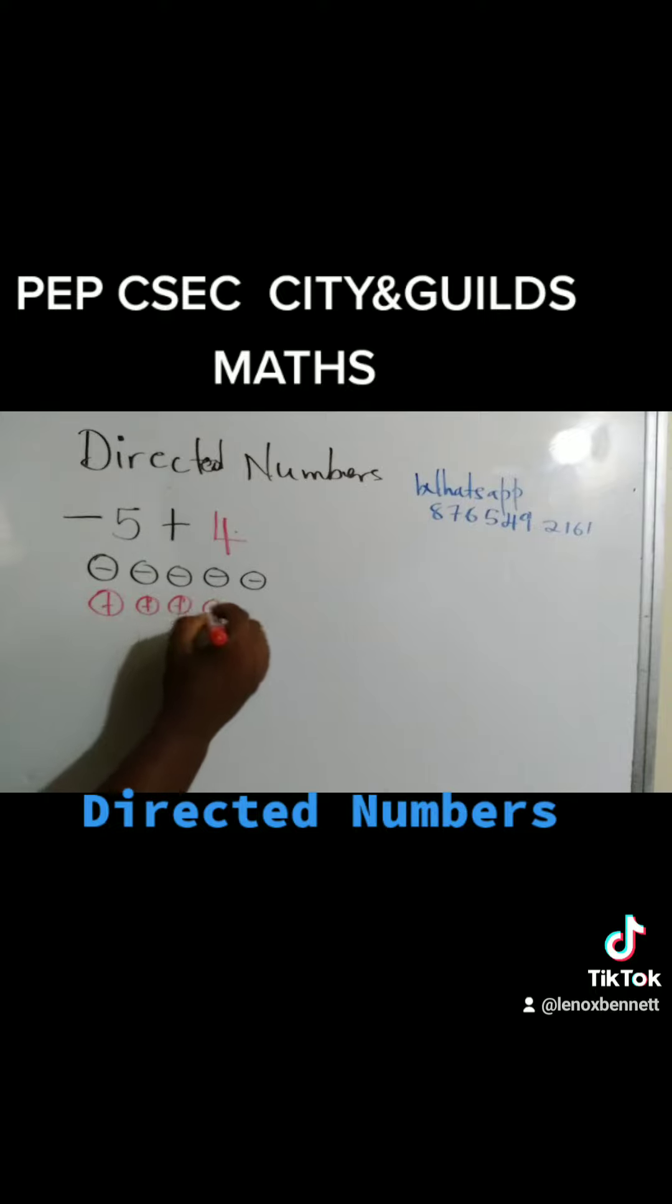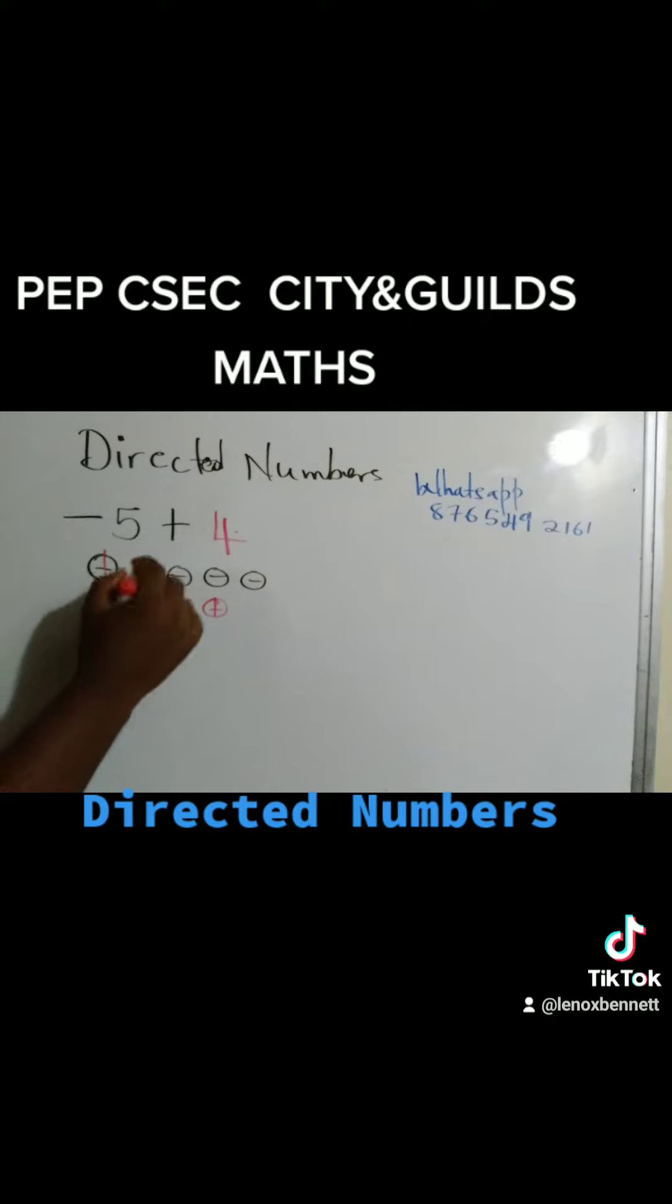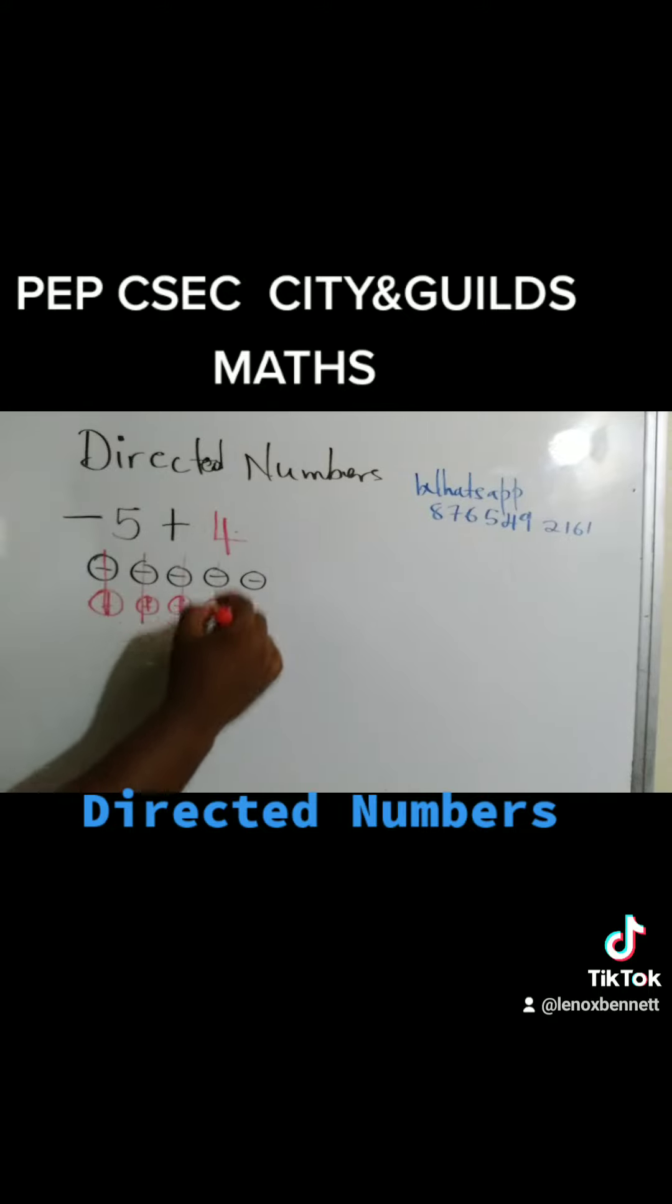Now each positive cancels a negative. So we call it a zero pair. So these are going to cancel each other. Now how many are left? If you said 1, that's correct, but it's negative, right?